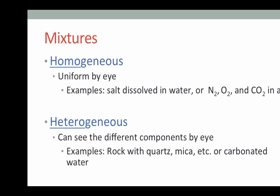When we combine pure substances to form a mixture, we can have two possible results. We can either have a homogeneous or homogenous mixture, which is uniform by eye, or we can have a heterogeneous mixture, where we can clearly see the different components within the mixture.